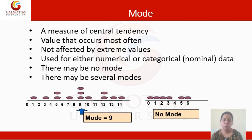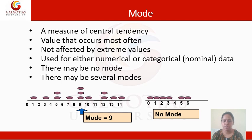In a given data set, there could be more than one mode or possibly no mode at all, depending on the data. For example, from observations 1 through 14: value 5 appears twice, value 9 appears three times, and value 12 appears twice. Since 9 has the maximum number of iterations, the mode is 9.